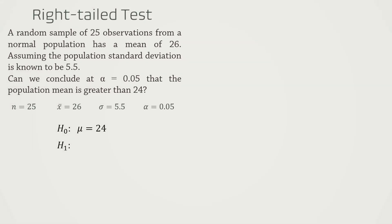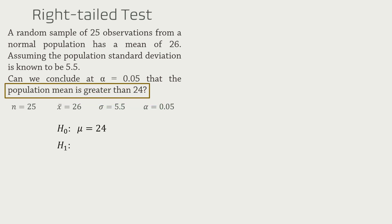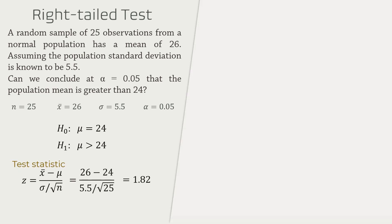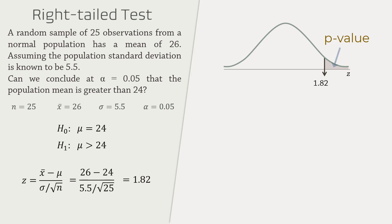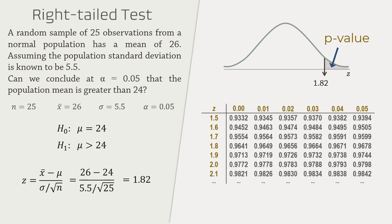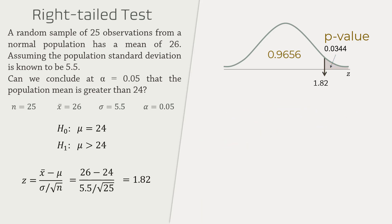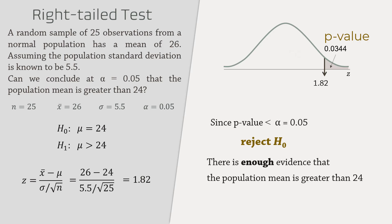Next, let's look at a right-tailed test. We now have a sample mean of 26, a population standard deviation of 5.5, and we are testing at alpha equals 0.05 whether the population mean is greater than 24. This requires the alternative hypothesis to be mu greater than 24. The test statistic will be 1.82, and the p-value will be the area in the right tail of z equals 1.82. Looking that up in the z-table or software, the less than area is 0.9656. Subtracting that from 1, we have a right-tailed area of 0.0344, which is the p-value. Since this p-value is less than alpha of 0.05, we will reject the null hypothesis and conclude that the population mean is greater than 24 at the 5% significance level.